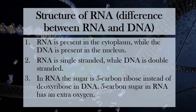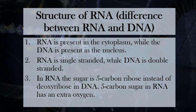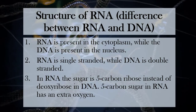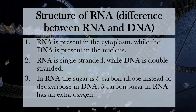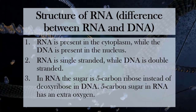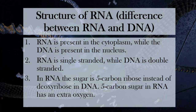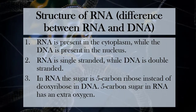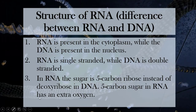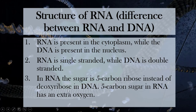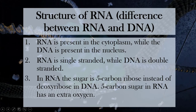The third difference is between their 5-carbon sugars. The 5-carbon sugar in RNA is ribose, whereas the 5-carbon sugar in DNA is deoxyribose — hence the name deoxyribonucleic acid. Another difference is that RNA has one more oxygen compared to DNA.